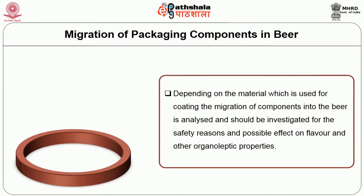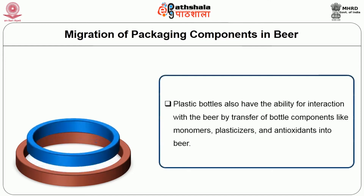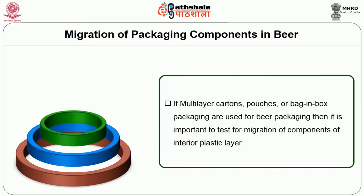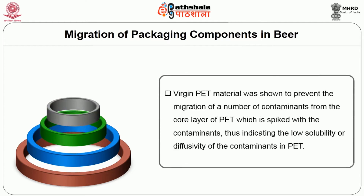Depending on the material used for coating, the migration components into the beer should be analyzed and investigated for safety reasons and possible effects on flavor and other organoleptic properties. Plastic bottles also have the ability for interaction with beer by transfer of bottle components like monomers, plasticizers and antioxidants into beer. If multilayer pouches or bag-in-box packaging are used for beer packaging, it is important to test the migration of components of the interior plastic layer. Virgin PET material was shown to prevent the migration of a number of contaminants from the core layer of PET, indicating the low solubility or diffusivity of contaminants in PET.